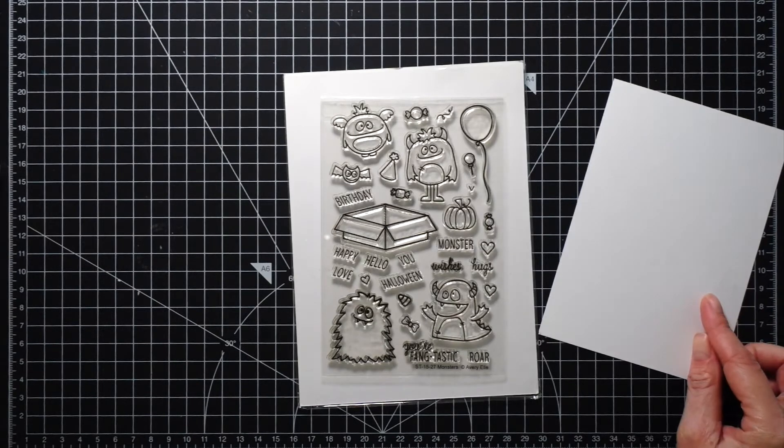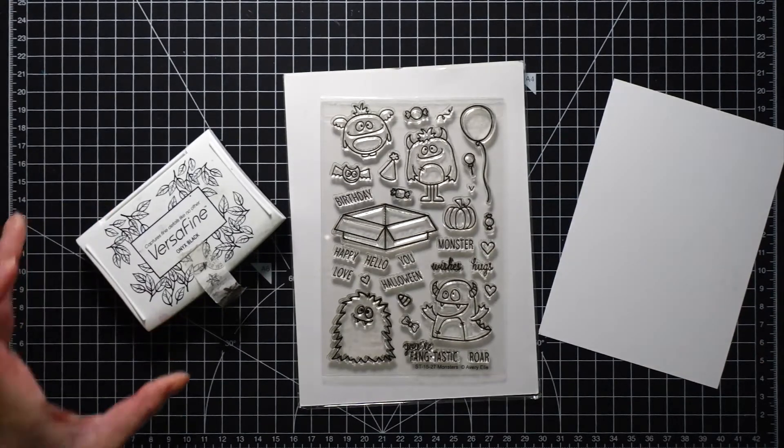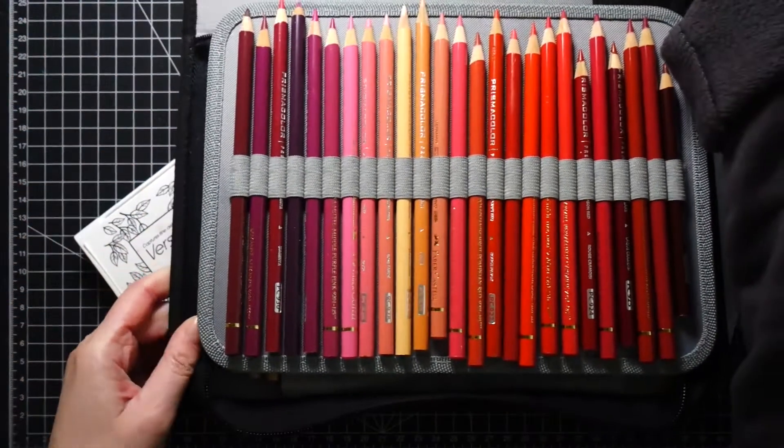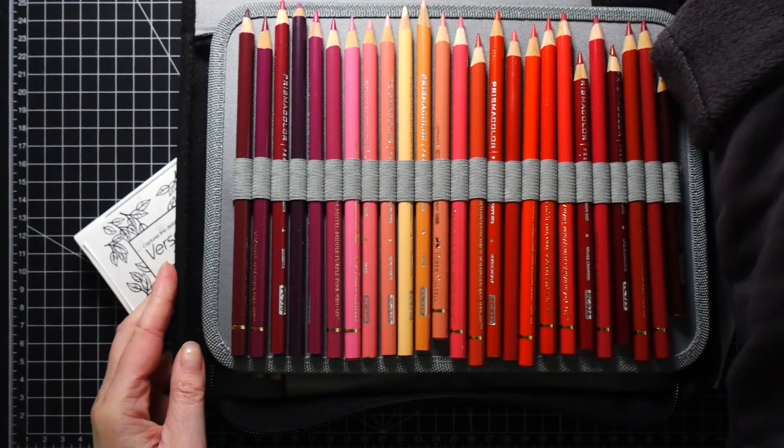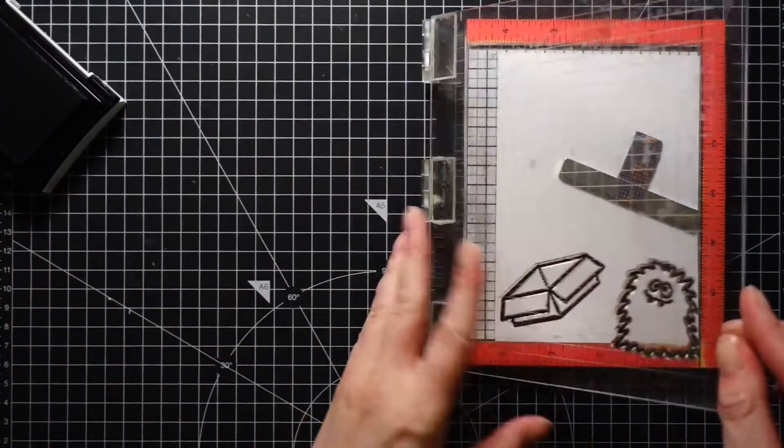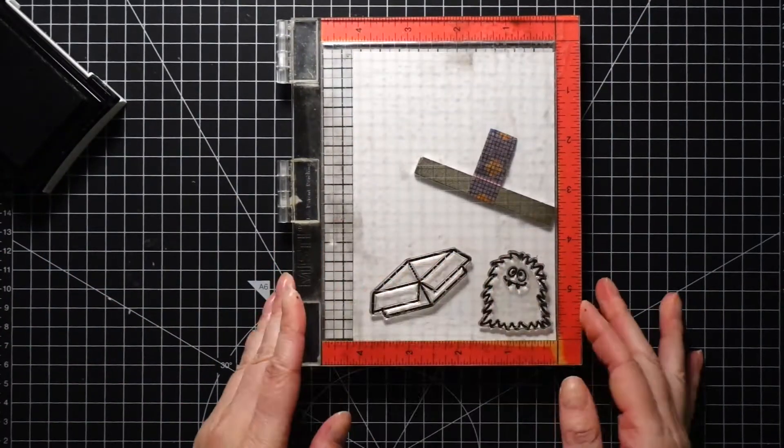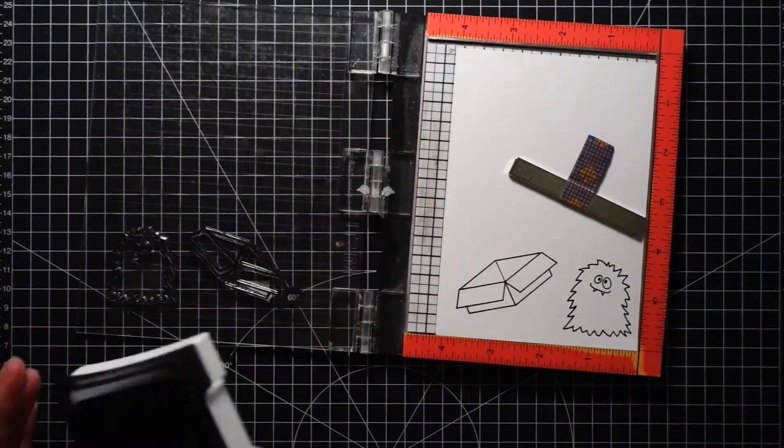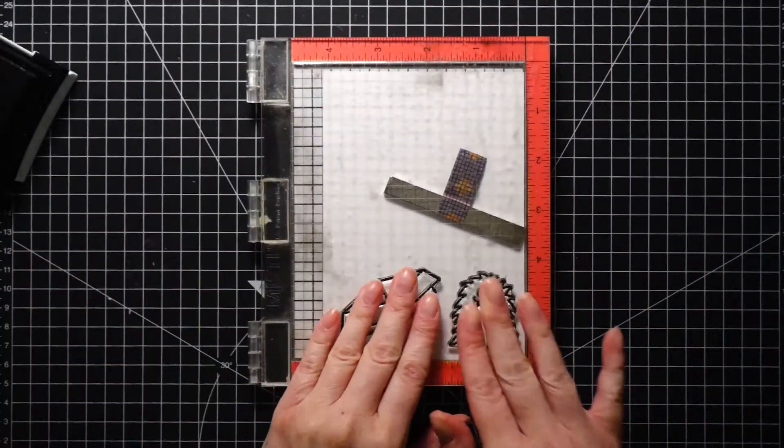I will be using a Bristol cardstock from Canson and the Versafine ink in onyx black. To color the images I decided to use my coloring pencils. I started by stamping one of the monsters and I also picked the stamp with a box. I stamped those images using my mini MISTI stamping tool, but you can also use an acrylic block for this as well.